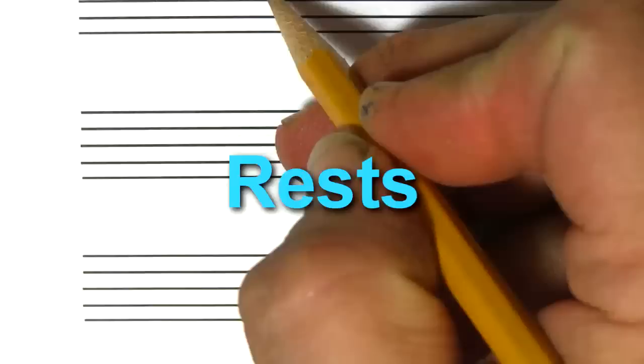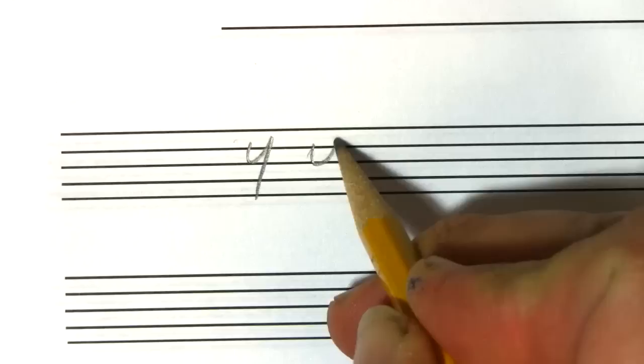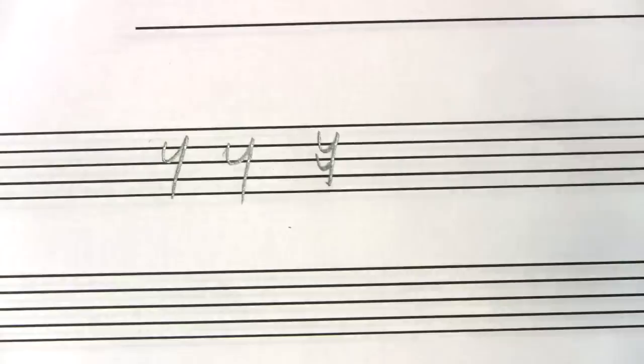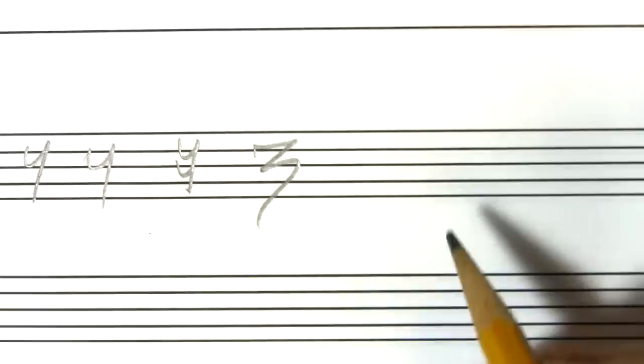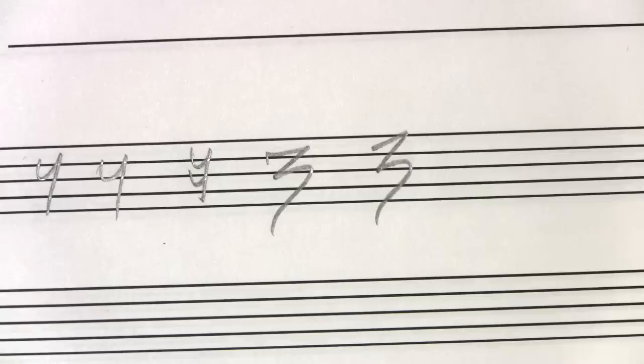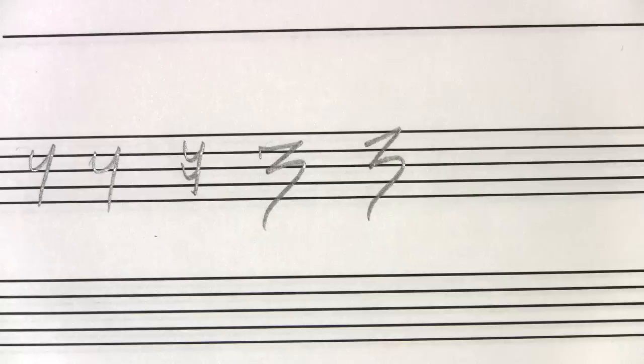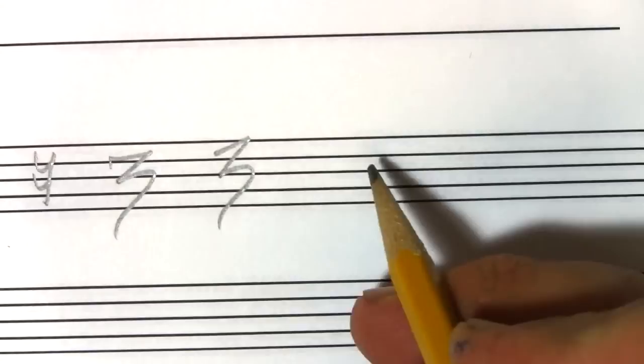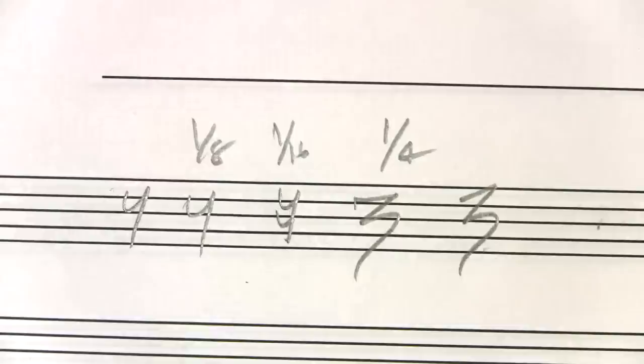A rest is where you don't play. An eighth note rest is drawn simply — down, up — like that. A sixteenth note rest would be two of those. A quarter note rest goes the opposite way, making a shape like a big number three. These are handwritten notes — notation programs print them a little differently, but guys who handwrite rests always write them this way.